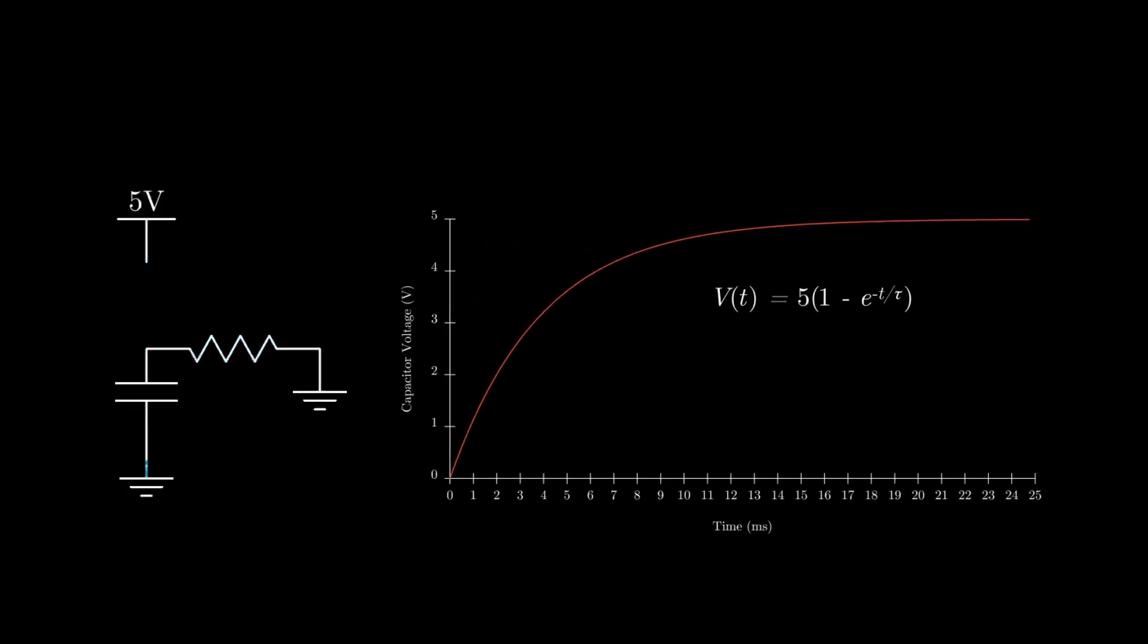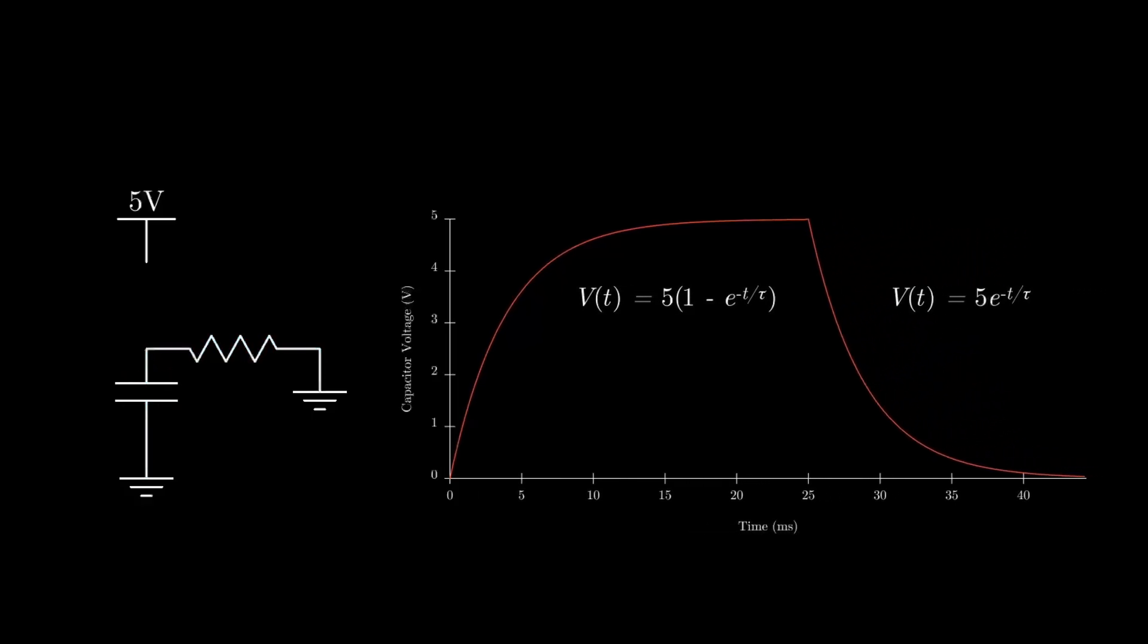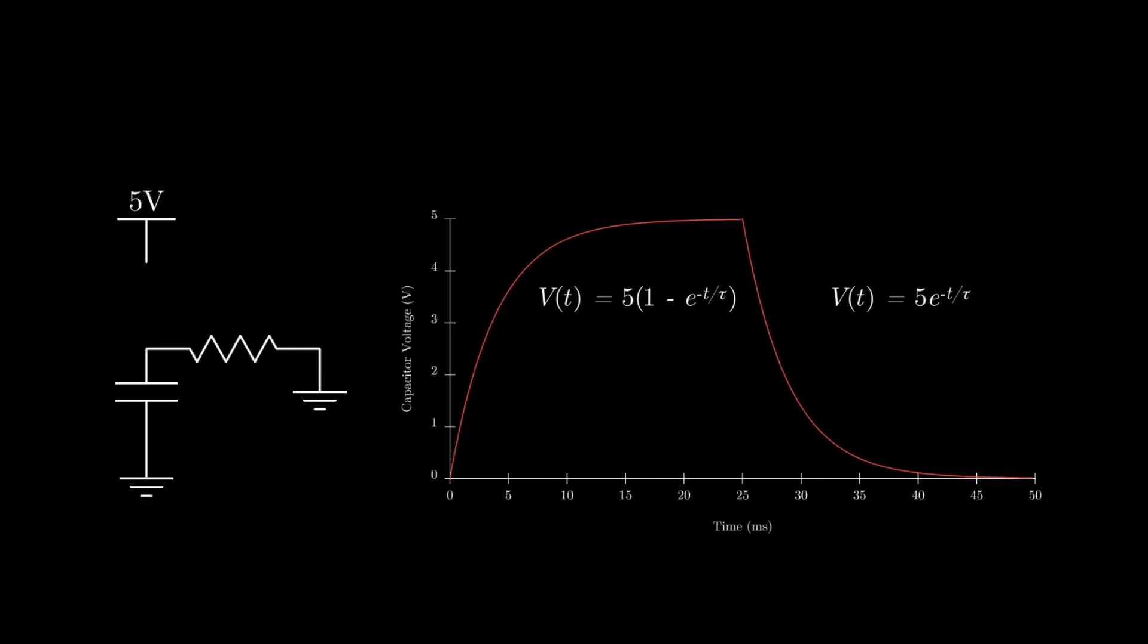Let's now look at what happens if we connect the positively charged terminal to ground. The capacitor will now discharge through the resistor to ground and the voltage will drop exponentially towards zero. If we want to use this circuit as a clock we need to be able to charge and discharge the capacitor repeatedly.